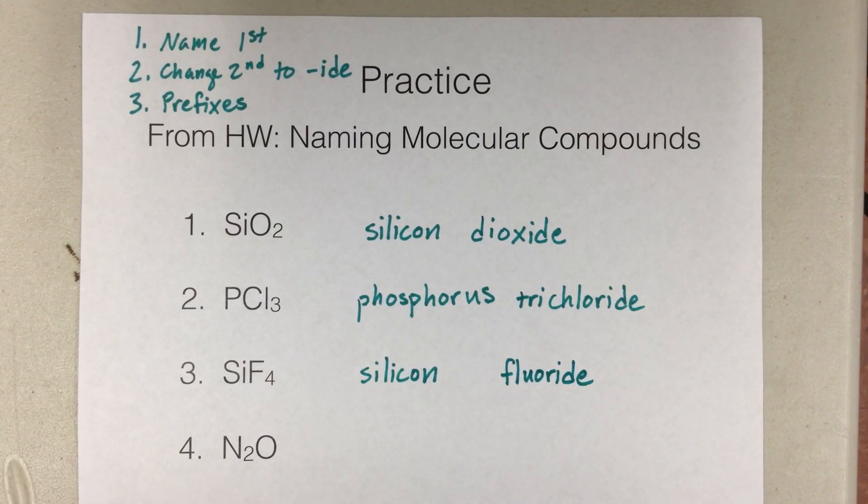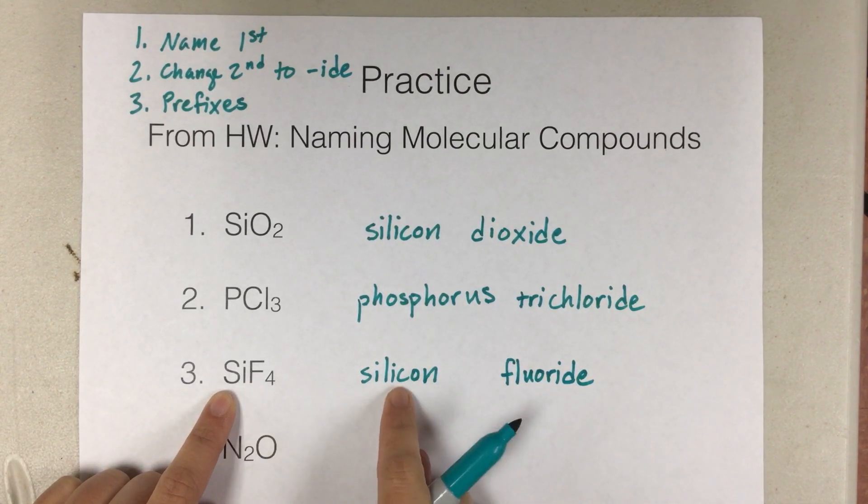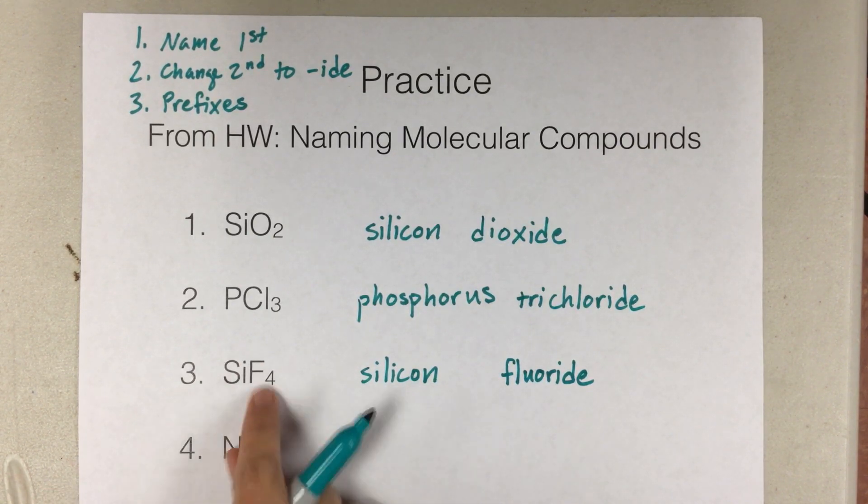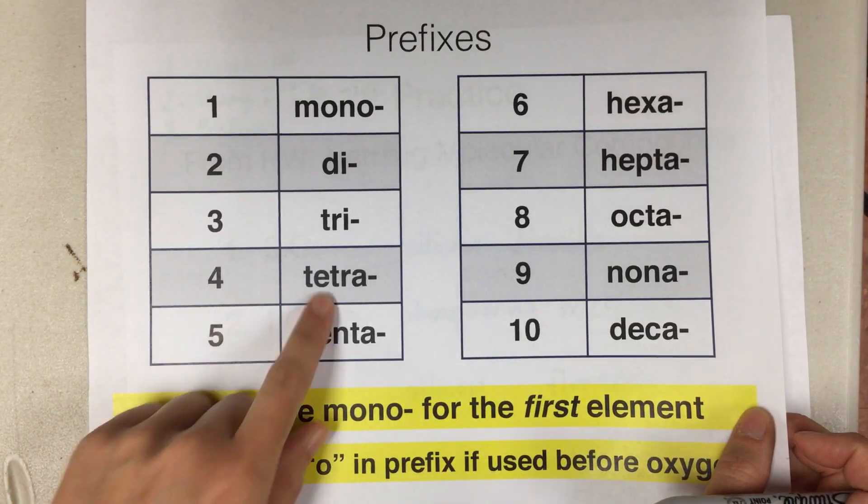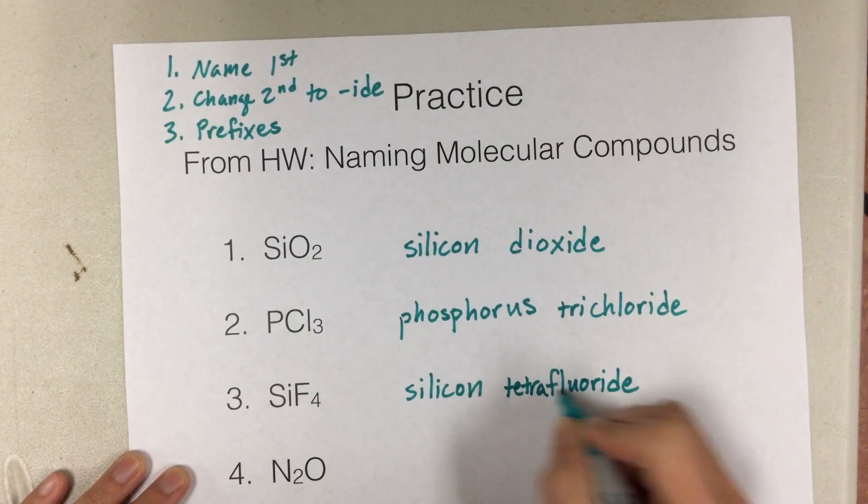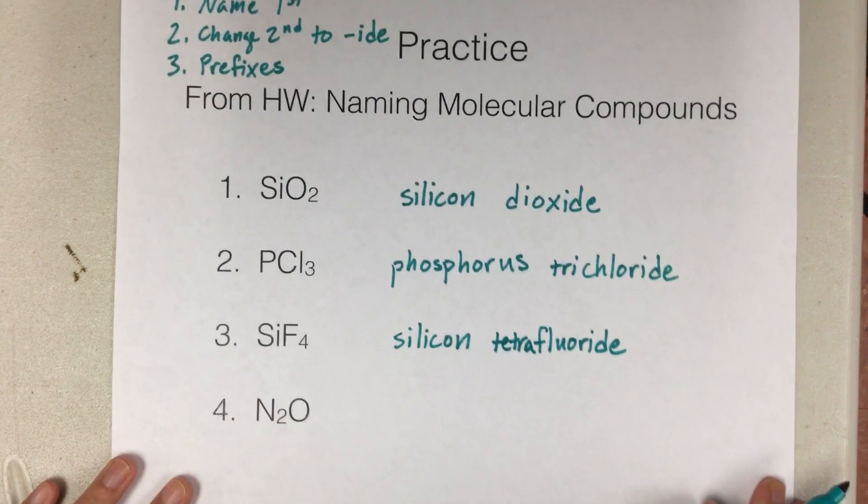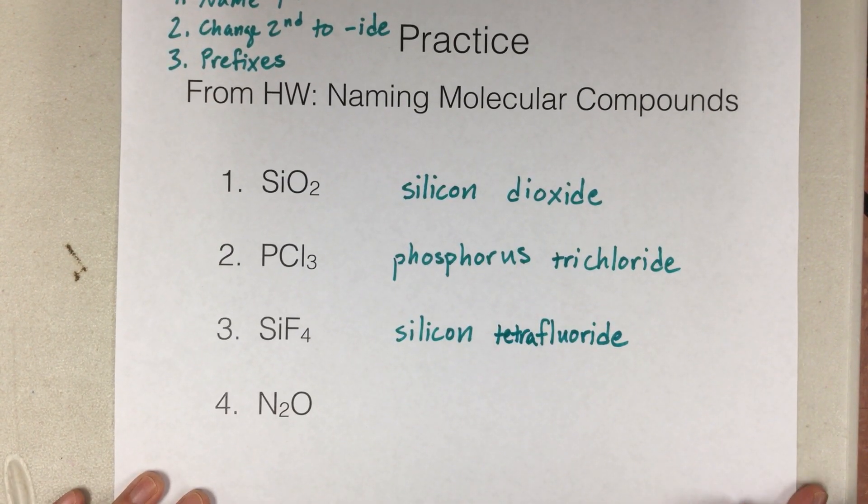And then we have four of them. So we need to get our prefixes. Remember silicon, we just had one. So we don't use a prefix here. If it's the mono one, we don't put it. But the fluorides, we have four of them. So we look on our list. Four is tetra. So we add tetra in front of fluoride. And that's the name for SiF4, silicon tetrafluoride.